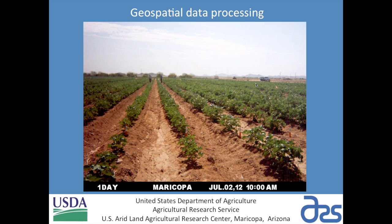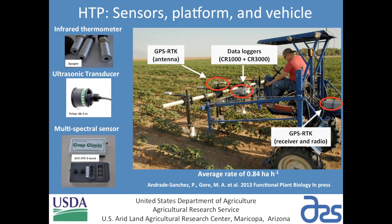We're going to be using geospatial data processing for that. To quickly review what we have on board the tractor: we have three different types of sensors including infrared thermometers which measure the canopy temperature, an ultrasonic transducer which measures the distance from the top of the canopy to the sensor to give us plant height observations, and multi-spectral crop circle sensors which measure the reflectance of the canopy. We have one of these sensors on each of four rows on the machine, and all data is geolocated by one GPS receiver.